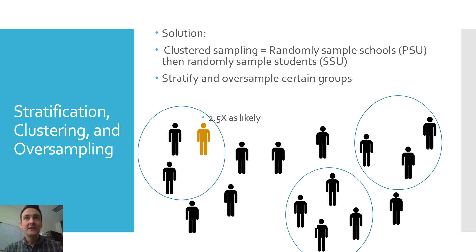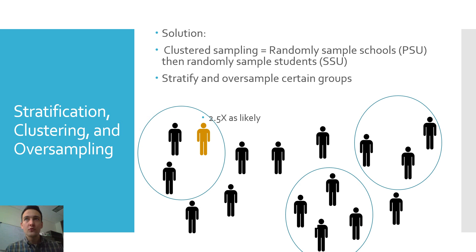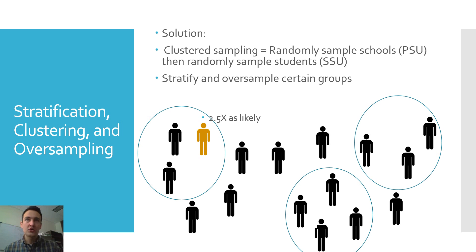A solution is clustered and stratified sampling. Clustered sampling addresses the issue of logistically trying to reach so many different places. All clustered sampling is is a series of steps in which we first sample a larger group, and then within that larger group, sample a smaller group. In the example of schools, instead of immediately sampling students, we could first sample schools — maybe 1,000 or 2,000 schools, a number reasonable for us to actually travel to and administer surveys. We call that first level the primary sampling unit, or PSU. Within the PSU, we could then sample students, which we call the secondary sampling unit, or SSU. It's quite common in large-scale surveys, particularly those done by NCES, to see some level of clustering across different levels — often surveying a region first, then schools within that region, then students within the school.